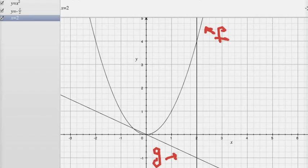Alright, so here is the graph of that system. We've got f, which is the parabola x squared right here. We've got g, which is the line negative x over 2.